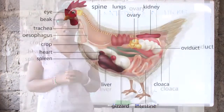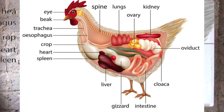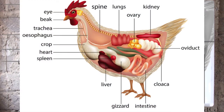We have the gallbladder, which everybody knows. The bird has a spleen and it has a liver. The bird also has one part that is liver-related called the gizzard, and everybody should note that the gizzard is the true stomach of the bird.